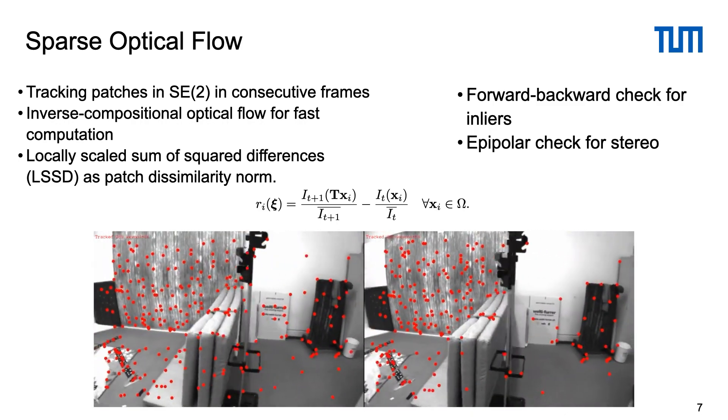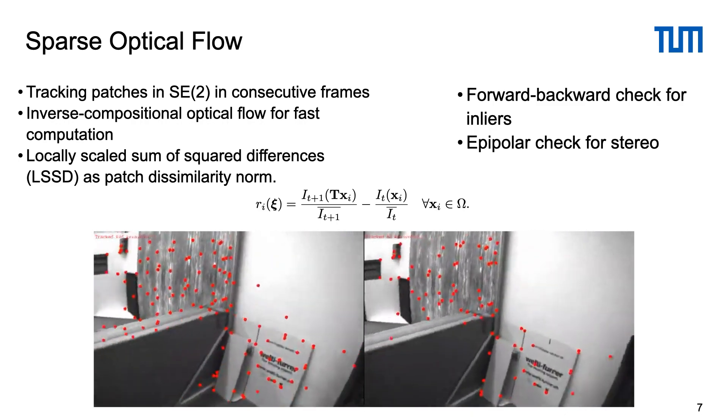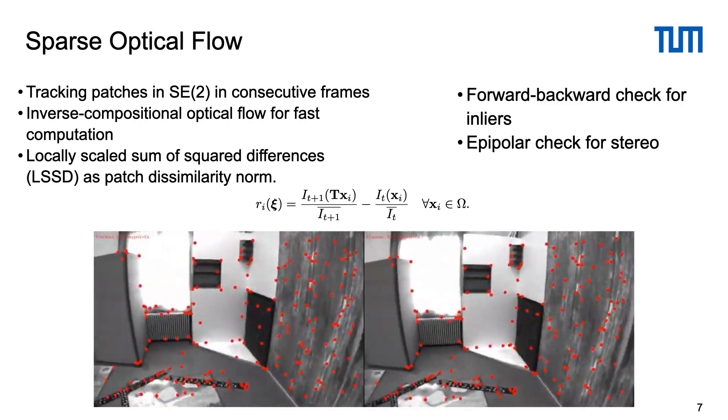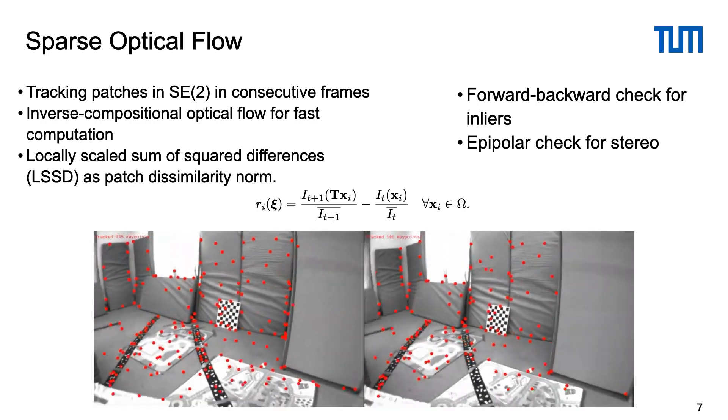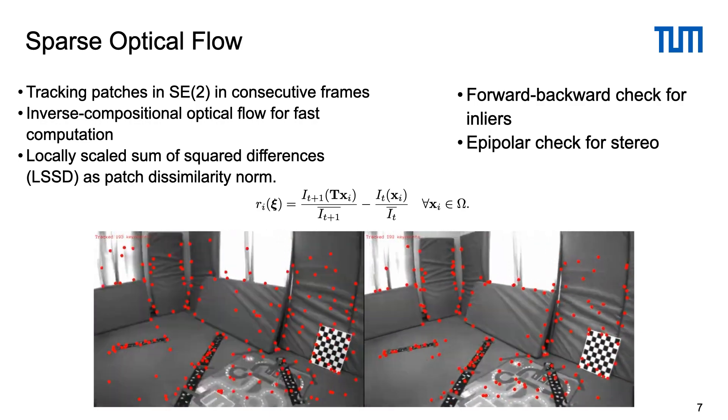To remove outliers we track all patches to the target frame and then backwards to see if they return to the same location. Additionally we use epipolar checks for stereo pairs.